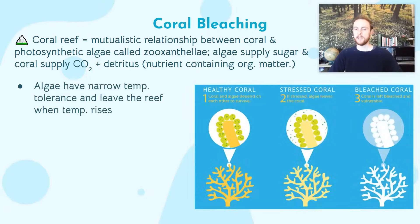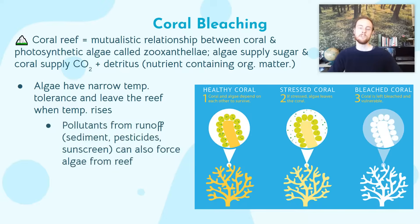Bleaching is the loss of those algae. Due to the narrow temperature range the algae have, when the ocean warms even a little bit, they are expelled or leave the coral reef, and when they leave, the reef loses its color — that's why we call it bleaching. It takes on a white, crusty, bone-like color. This can also be caused by pollutants such as pesticides from agriculture or sunscreen from beachgoers, contaminating the water to the extent the algae can no longer survive.